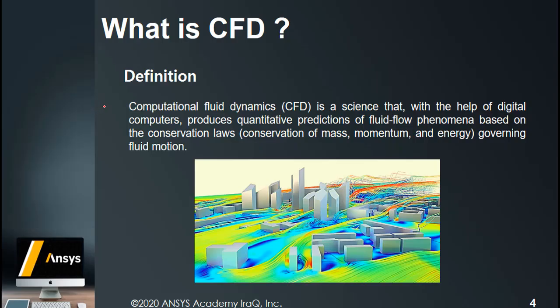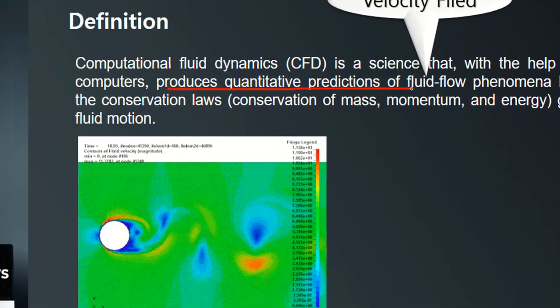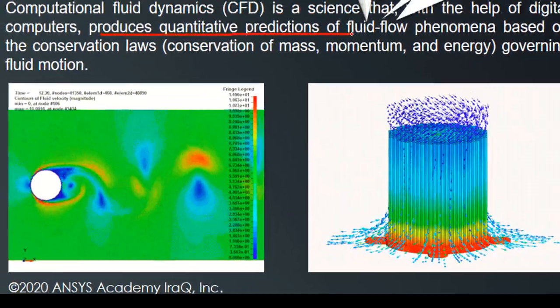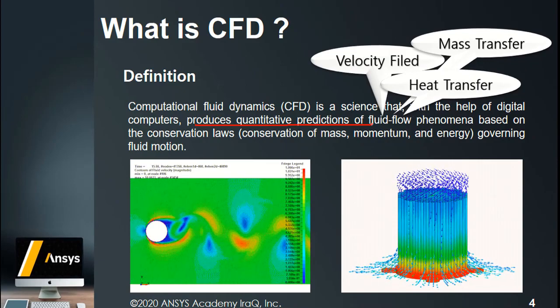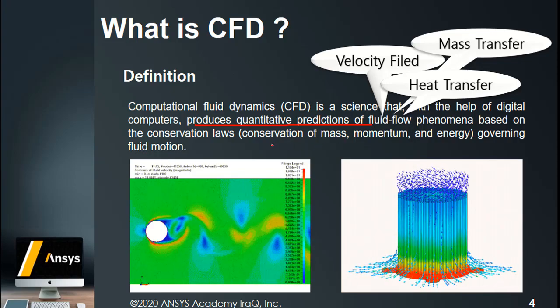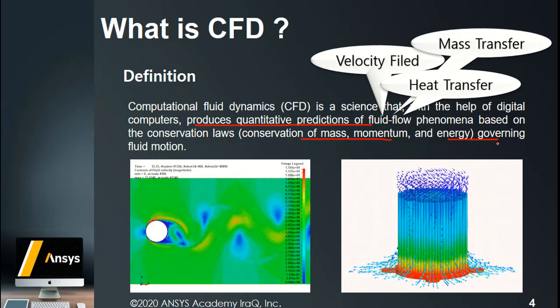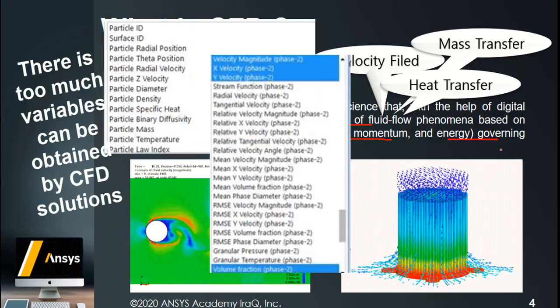Now, what is CFD? CFD is a branch of fluid mechanics that uses numerical methods like finite element and finite volume to obtain the variables of a fluid flow and any correlated phenomena like heat and mass transfer. It produces quantitative predictions for variables such as velocity, temperature, and density — all obtainable from governing equations like continuity, momentum, and energy — making it a general science for obtaining a wide range of variables for the entire flow domain.